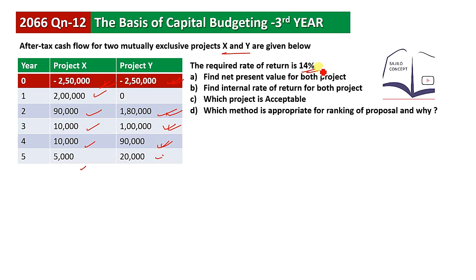The question is centralized at a 14% discount rate. We need to find the NPV — net present value — for both projects. We also need to find the IRR and relate it to NPV. Based on NPV and IRR, we must determine which project is acceptable and which method is superior.